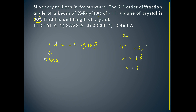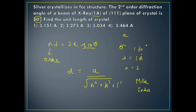We have n, lambda, and now d. The value of d is equal to a divided by the square root of (h squared plus k squared plus l squared). The values h, k, and l are called Miller indices.